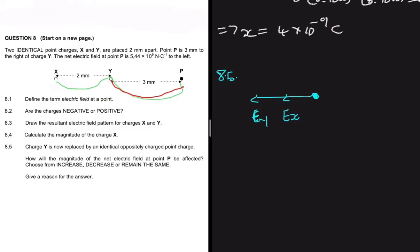Now that Y is positive, its electric field will push point P to the right instead of pulling it to the left. So the electric field due to X still points to the left, but the electric field due to Y now points to the right. Since electric field strength is a vector, these two fields now partially oppose each other, so the magnitude of the net electric field at P will decrease.